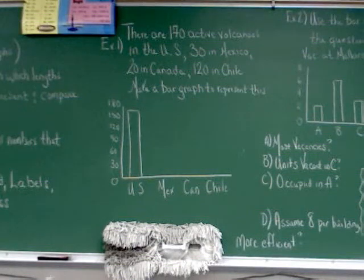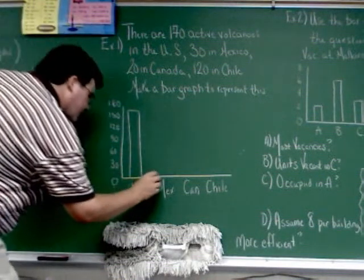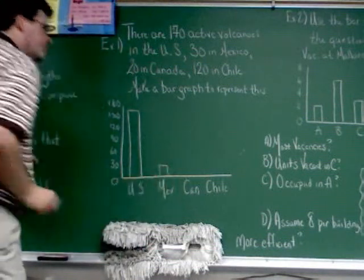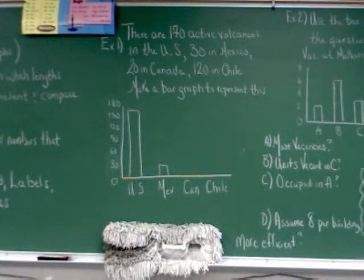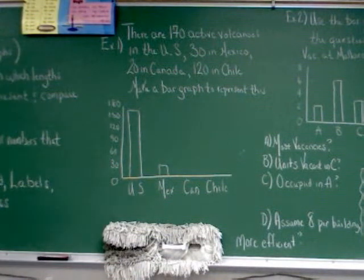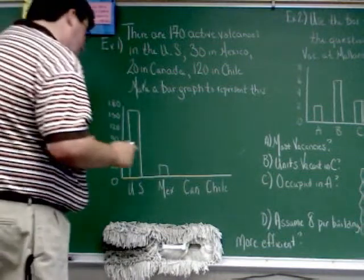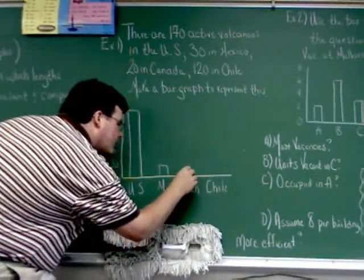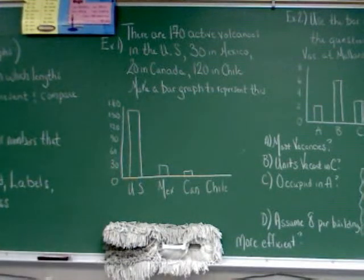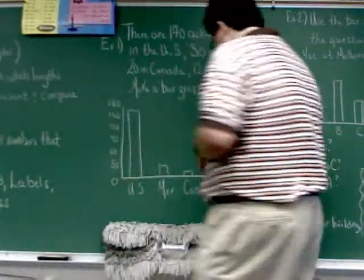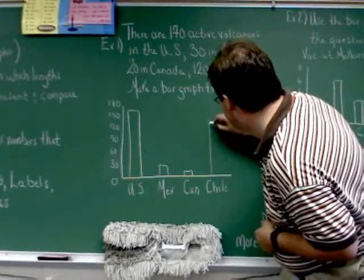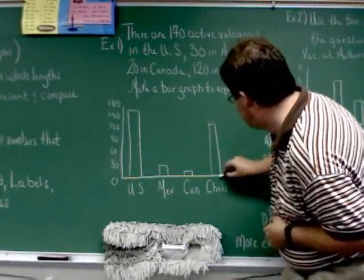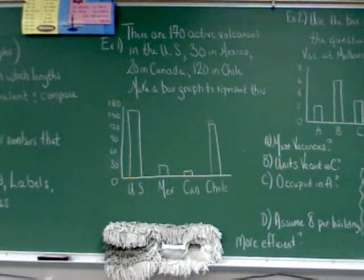Mexico is at 30. 30 is a number we do have on our graph. So we can go right to the 30 mark. Canada has 20. I can't believe there's volcanoes in Canada, but maybe there are. Something like that maybe? And 120 in Chile. It looks like saying Chile. Chile? No, it's 120. I feel like Chile. Chile. Chile. Not difficult.